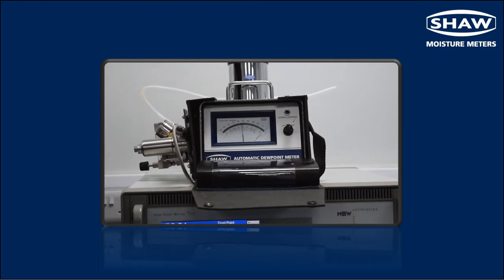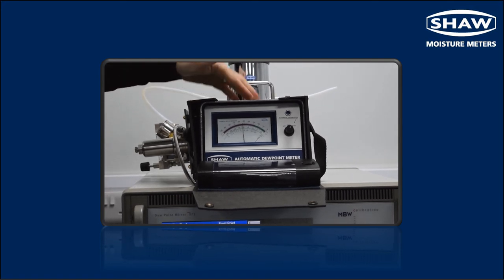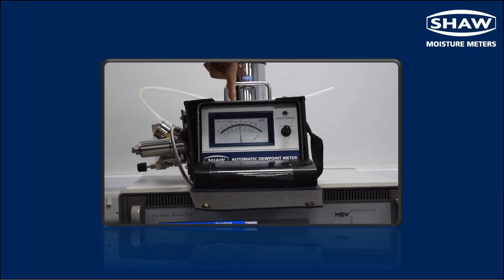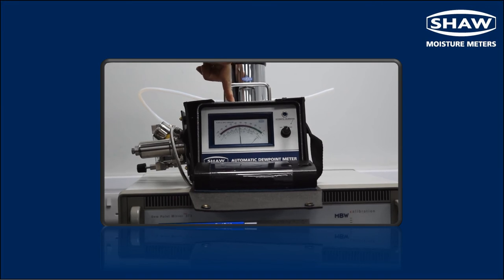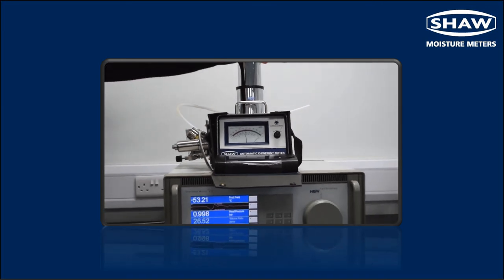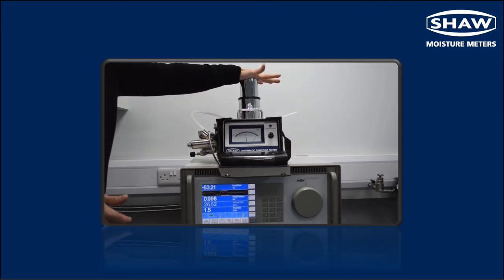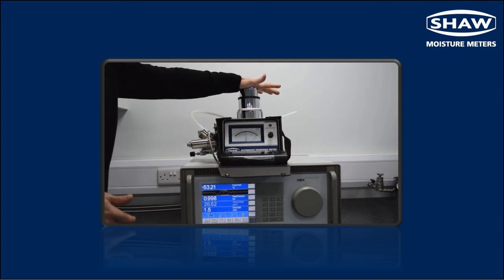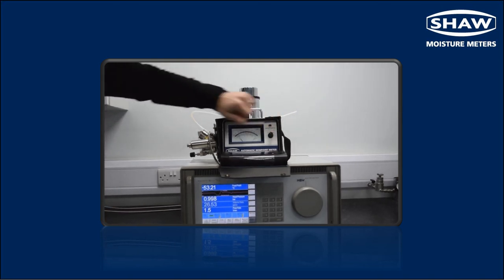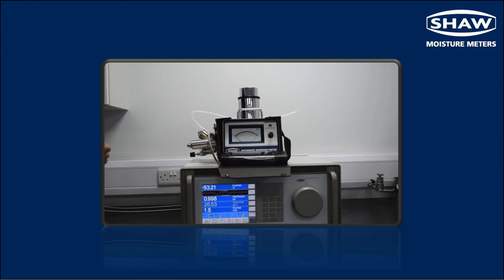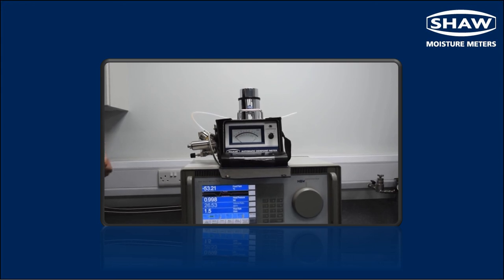Right, so after five minutes the SADP has come into equilibrium with the process gas. The needle has stopped moving so we're ready to take a reading. Once that's done we can put the sensor back in the dry down position, turn off the dew point meter, and then we can disconnect it and move on to the next point.